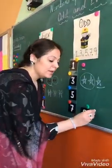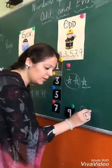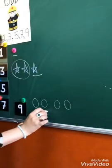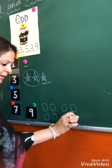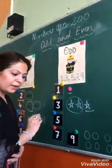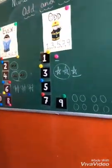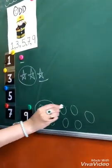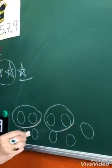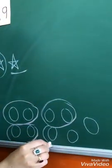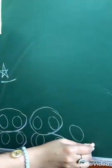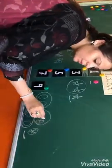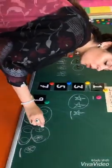Let's take an example of number nine. I have nine balls: one, two, three, four, five, six, seven, eight, and nine. Can I form a pair out of these balls? Yes — one pair, two pair, three pair, four pair — and this poor ball is standing all alone. That's why number nine comes under odd numbers.